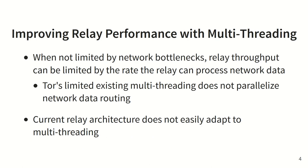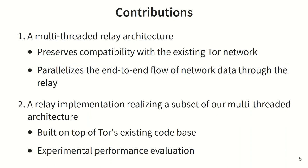When relays aren't limited by network bottlenecks or configuration options, they can be CPU constrained because of Tor's heavy processing requirements. Tor relays require a lot of network data processing, which includes multiple layers of AES encryption, connection scheduling, and more. Tor's current relay architecture doesn't easily adapt to multi-threading, so this work presents a multi-threaded architecture which preserves compatibility with the existing Tor network and parallelizes the end-to-end flow of network data.